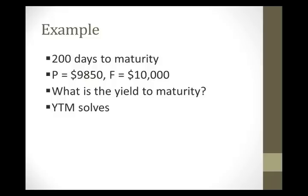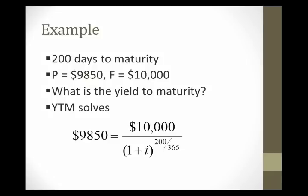So the yield to maturity is going to solve the following equation. So $98.50 is the purchase price, present value, and it's going to be equal to the discounted future cash flow. So a future cash flow is $10,000. We wait a fraction of a year, 200/365ths of a year, and we'll discount it by this interest rate, and that's our yield to maturity.